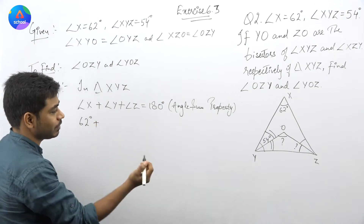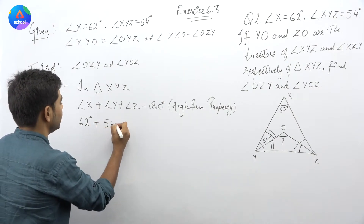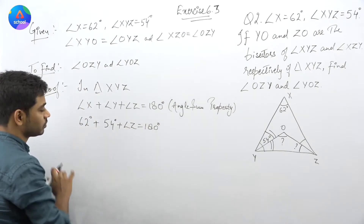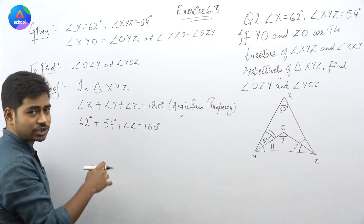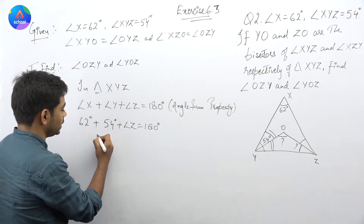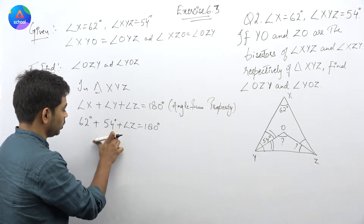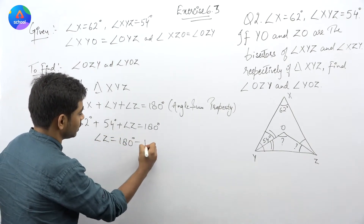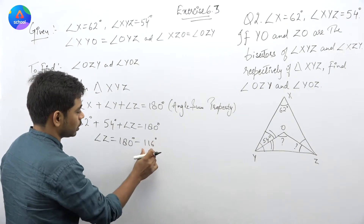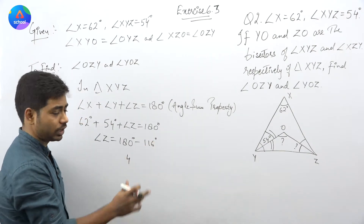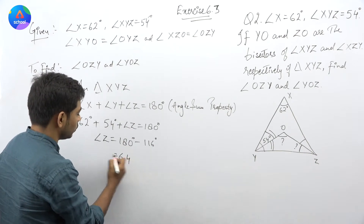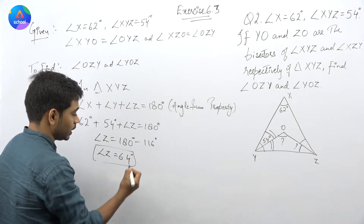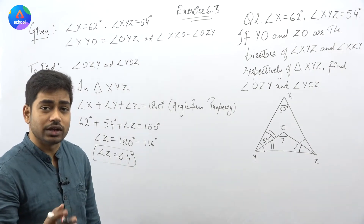Angle X की value 62 degree दे रखी है, angle Y की value 54 degree है — angle Z की value हम निकाल लेंगे। 62 plus 54 कितना हो जाएगा? 116। So angle Z बराबर 180 minus 116 — देखें: 116 में 4 add हुआ तो 120, और 120 में 60 add होगा तो 180। यानि कि 180 minus 116 = 64 degree।